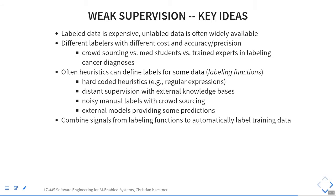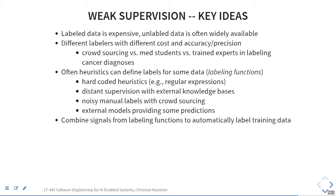The idea here is that labeling data is expensive. For learning, you need labeled data. Depending on the context, you get very cheap labeled data because you can just wait a week. But in most cases, you need people to label data, whereas unlabeled data is super easy. If you want to classify images, you can get hundreds of images from the internet, but they're usually not labeled. And there are many different ways of labeling them.